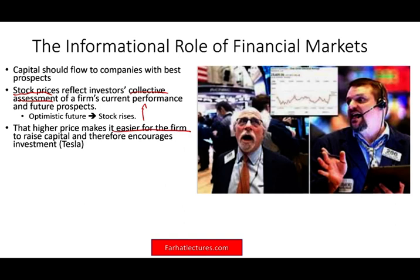Higher prices make it easier for the firm to raise capital and encourage investments. For example, as Tesla's stock goes up, although Tesla is not currently making any profit, the prospect of Tesla in the future is high. Therefore, the higher the stock price, the better their prospect. If Tesla needs to raise money, investors are willing to give them money on a regular basis — Tesla can issue stocks — because their stock price keeps rising, reflecting the investors' collective assessment and a positive, optimistic view about their future.